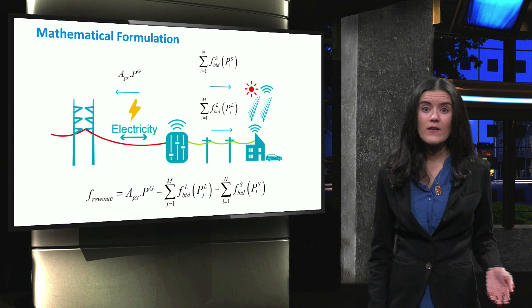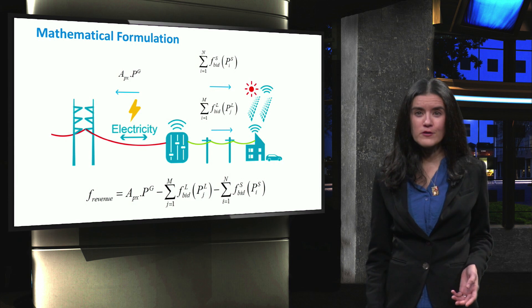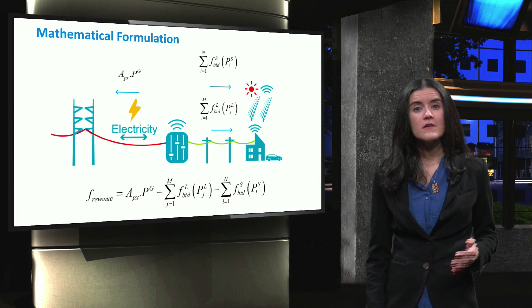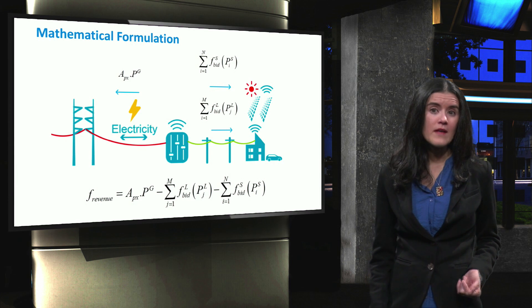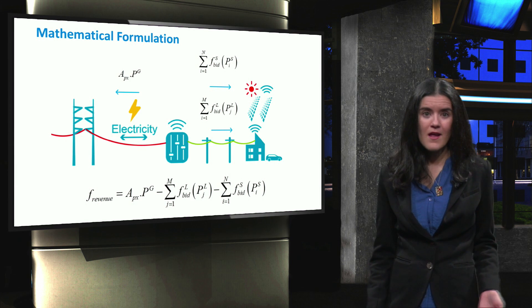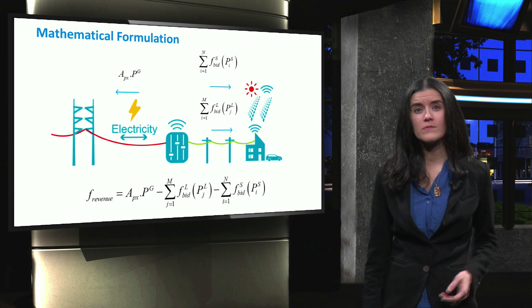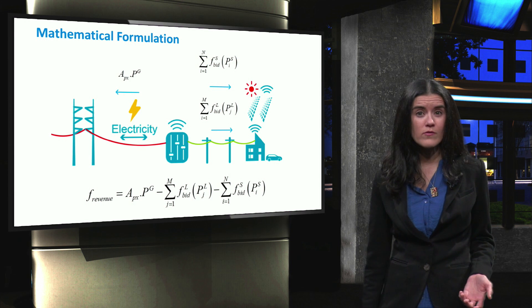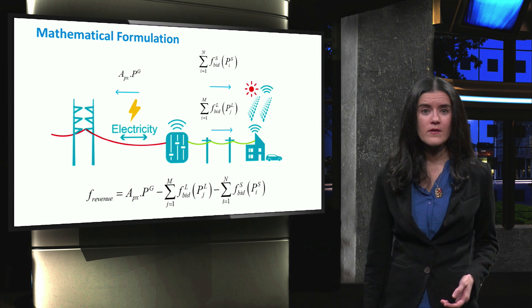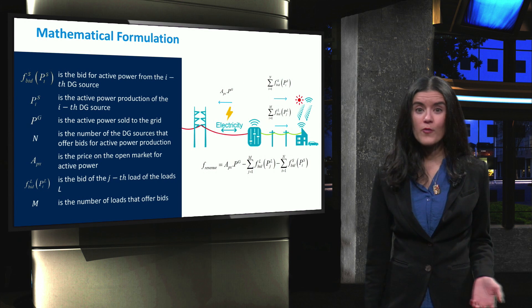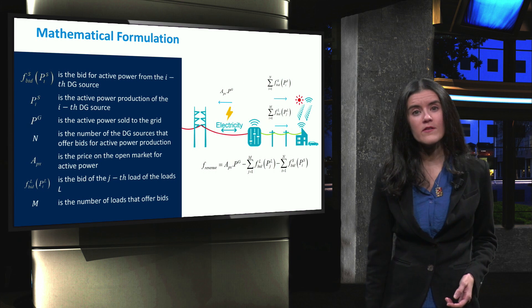In order to solve an optimization problem, the objective function has to be defined. Some assumptions have to be considered, and constraints have to be established. Let's consider an example of a microgrid where the main objective is to maximize the total revenues of the microgrid operator. To formulate and solve the problem, we can consider the following assumptions.